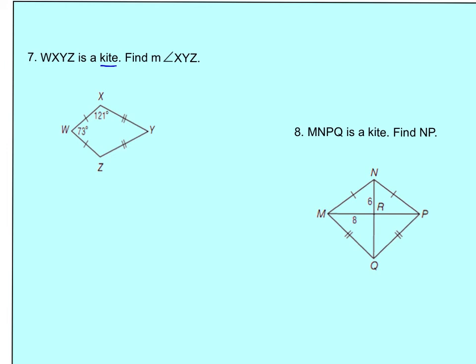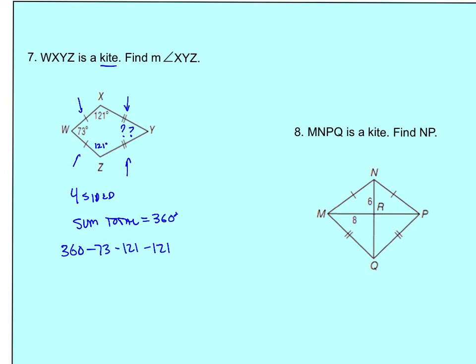This is a kite. They want angles X, Y, Z. If these two sides are congruent and these two sides are congruent, then these two opposite angles are congruent, making that 121°. Since it's still a four-sided figure, all angles must sum to 360°. So 360 minus 73 minus 121 minus 121 gives the missing angle: 45°.